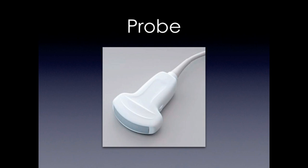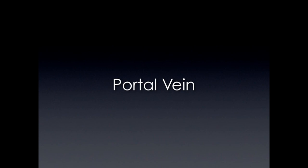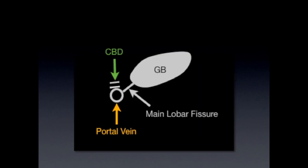We're going to use the abdominal probe. The main landmark that you're looking for is the portal vein — actually the portal triad. You want to orient yourself when you look for the portal vein; you want to follow the main lobar fissure to the gallbladder.